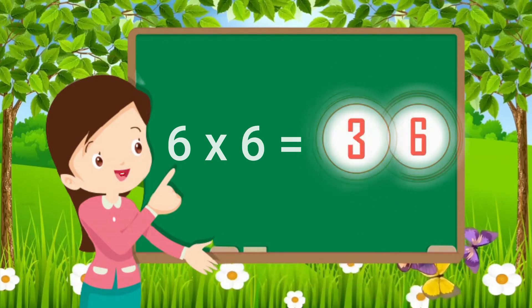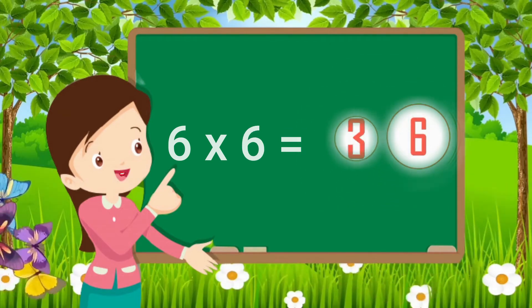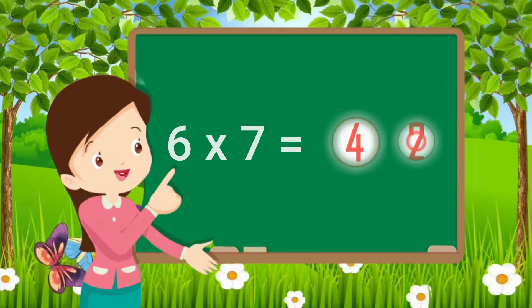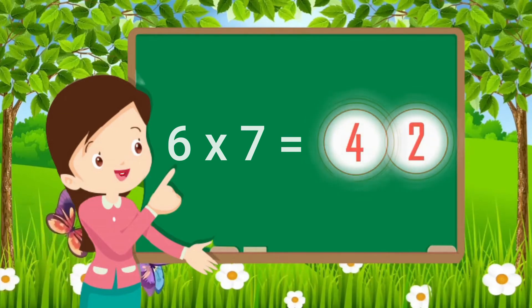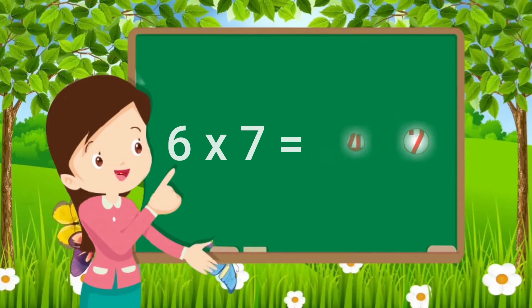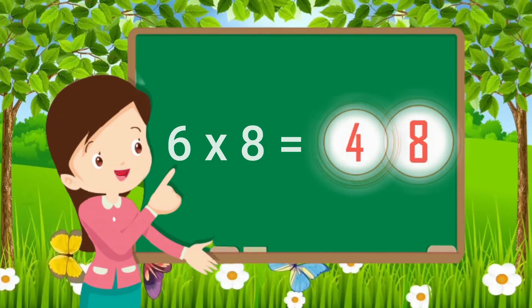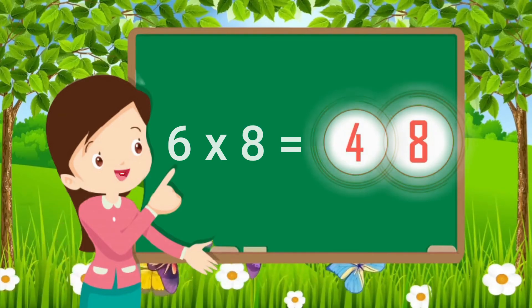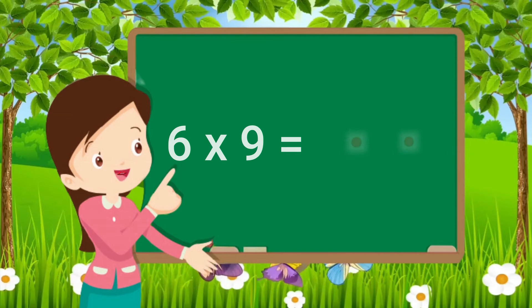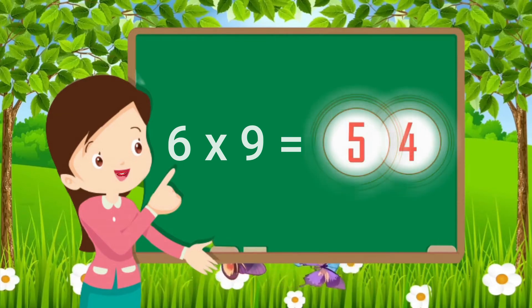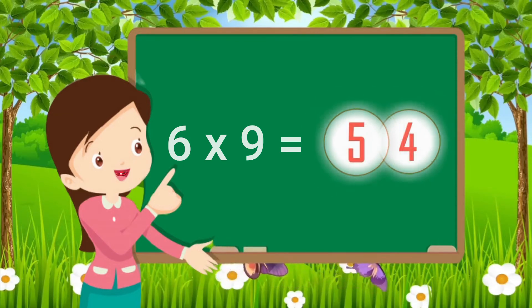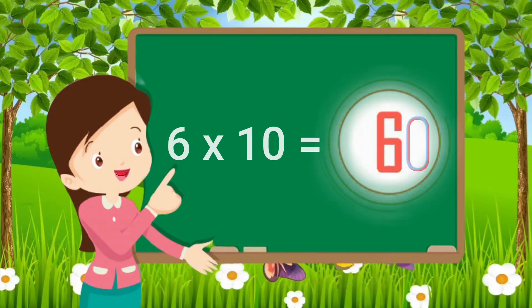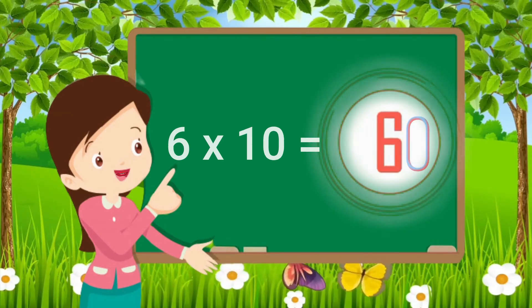Six sixes are thirty-six. Six sevens are forty-two. Six eights are forty-eight. Six nines are fifty-four. Six tens are sixty.